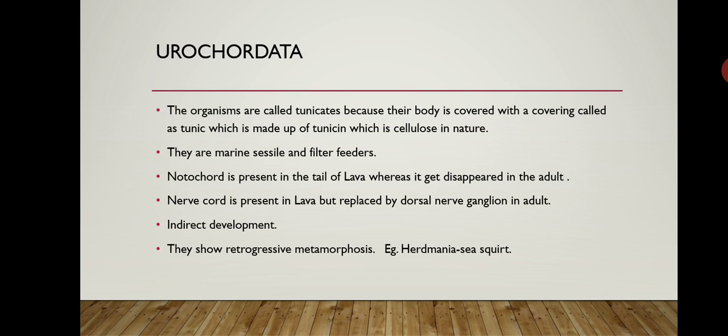In simple language, indirect development means the young one does not resemble the parents — there is a larval form, and through a cycle the larva transforms into the parent form. This cycle is called metamorphosis. There are two types: progressive metamorphosis and retrogressive metamorphosis. Urochordata shows retrogressive metamorphosis.